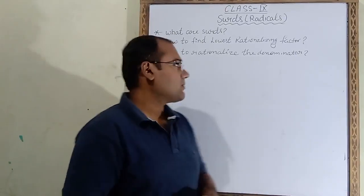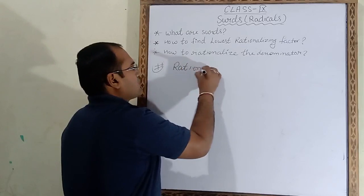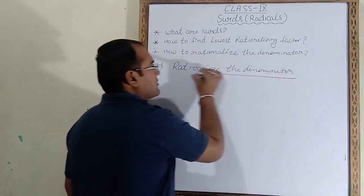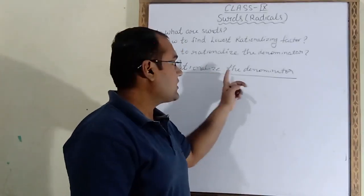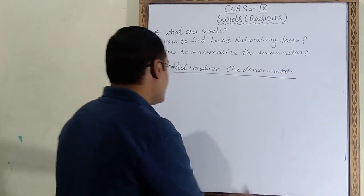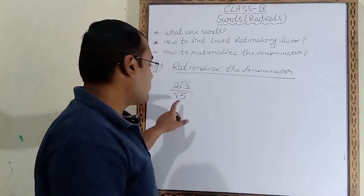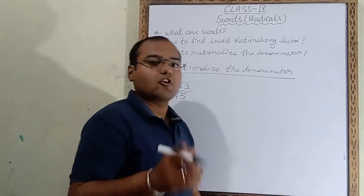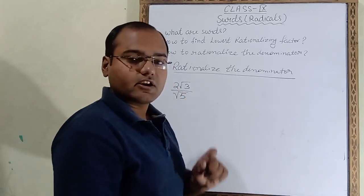The next topic is how to rationalize the denominator. Rationalize means we have to make rational, and here we need to make the denominator rational. Let's take the example 2√3 / √5. In the denominator, √5 is irrational because its square root is non-terminating and non-recurring. So we multiply and divide by √5.